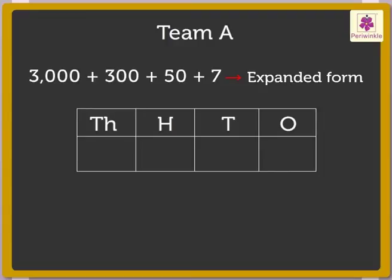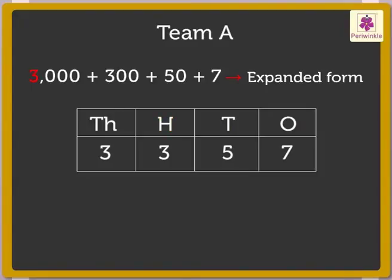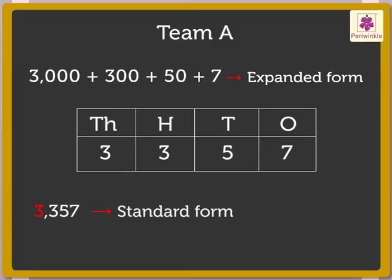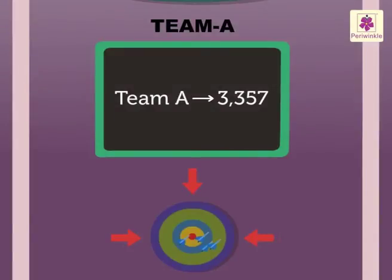To do that, let us write the numbers in the place value chart: seven in the ones column, five in the tens column, three in the hundreds column, and three in the thousands column. We found the number in standard form — that is three thousand three hundred fifty-seven. So Team A scored three thousand three hundred fifty-seven.